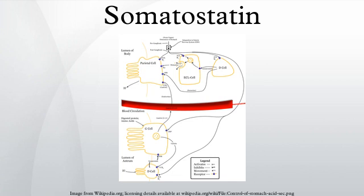Lanreotide is a medication used in the management of acromegaly and symptoms caused by neuroendocrine tumors, most notably carcinoid syndrome. It is a long-acting analogue of somatostatin, like octreotide. Lanreotide is manufactured by Ipsen and marketed under the trade name Somatulin. It is available in several countries including the United Kingdom, Australia, and Canada, and was approved for sale in the United States by the Food and Drug Administration on August 30, 2007.